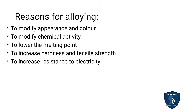Next, reasons for alloying: to modify the appearance and color; to modify the chemical activity; to lower the melting point — a high melting point can become low through alloying; to increase the hardness and tensile strength, for example pure gold mixed with copper forms hardness and strength; and to increase resistance to electricity.